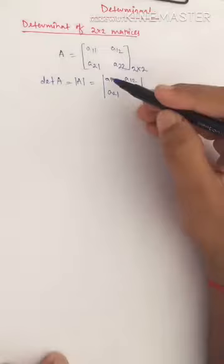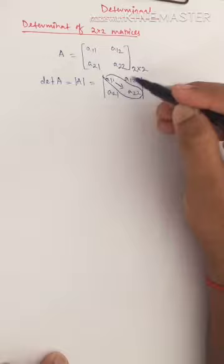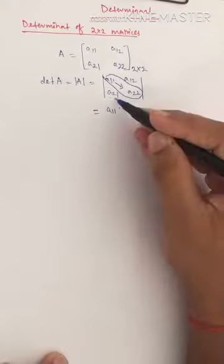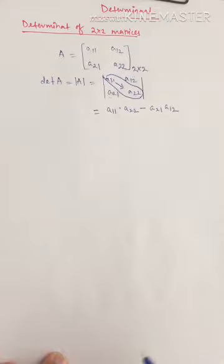First, multiply the diagonal elements — the diagonal elements here are a₁₁ and a₂₂ — and then subtract the multiplication of the non-diagonal elements. So you get a₁₁ × a₂₂ minus the multiplication of the non-diagonal elements, which is a₂₁ × a₁₂. So the determinant of a two cross two matrix is the multiplication of diagonal elements minus the multiplication of non-diagonal elements.